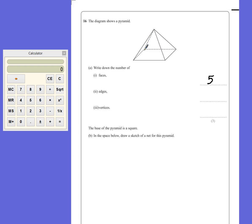So we have one, two, three, four at the top and four around the bottom, which means there are eight edges.